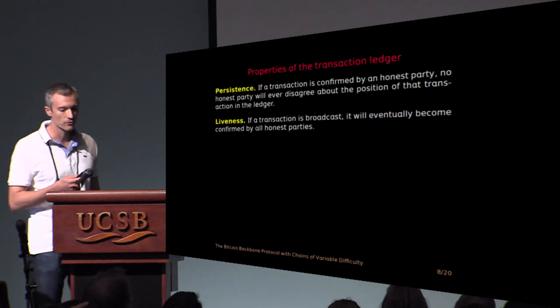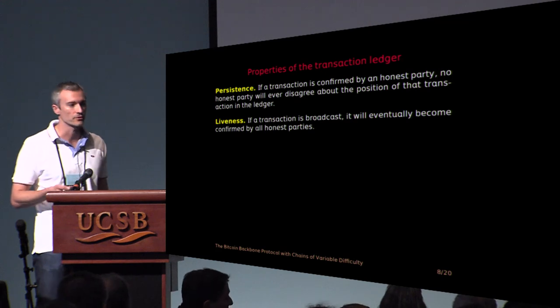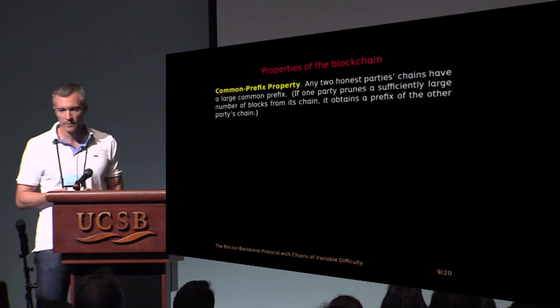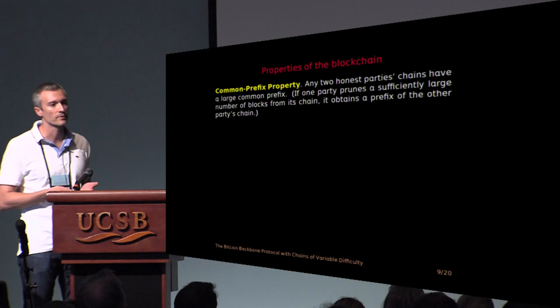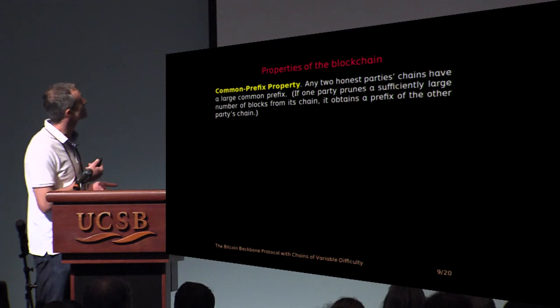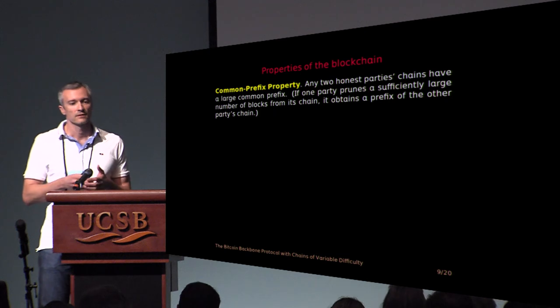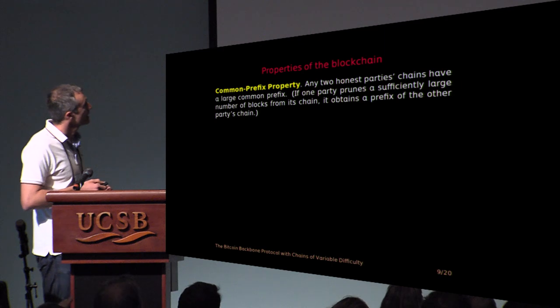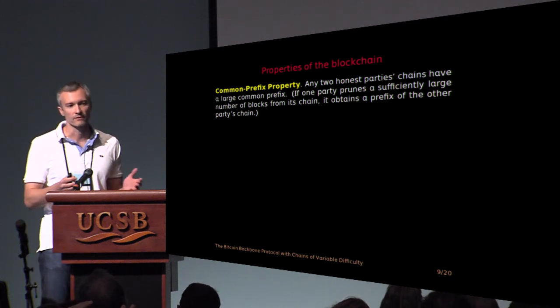So this property we call persistence. Another property is that you want the transactions eventually to get into the ledger. You don't want the adversary to have the power to stop that transaction from appearing. But we will be proving properties of the blockchain. So we want to express these properties as properties of the blockchain. The sister property of persistence is a common prefix property, which basically says that any two parties, the blockchains of any two parties share a large common prefix. Or otherwise, if two parties prune a few blocks from the end, then they end up with the same chain.